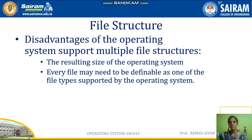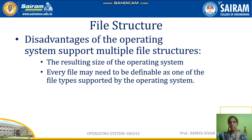The second problem is that every file may need to be definable as one of the file types supported by the operating system. For example, if one operating system supports only text files and executable files, and you need to save a file as an encrypted file — which is neither a text file nor an executable file — you cannot save it. That is the second disadvantage: how to save a file if its type is not supported by the given file structures.